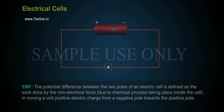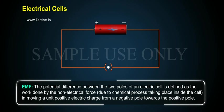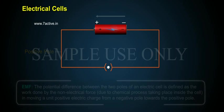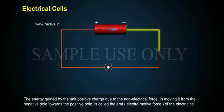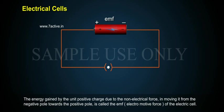The potential difference between the two poles of an electric cell is defined as the work done by the non-electrical force due to the chemical process taking place inside the cell in moving a unit positive electric charge from the negative pole towards the positive pole. The energy gained by the unit positive charge due to this non-electrical force is called the EMF, electromotive force.